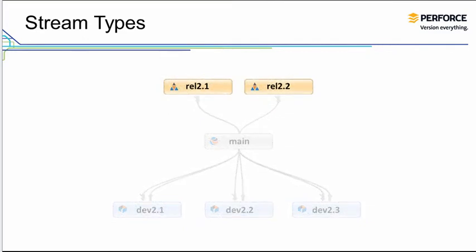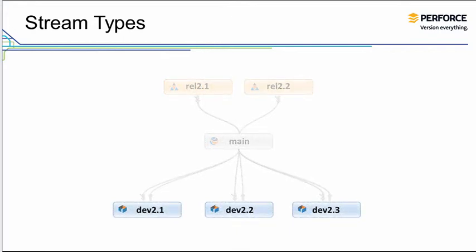You use release streams to refine and publish the final product, while others continue development on future versions in the mainline. You use development streams to work on new product features and functionality without destabilizing the mainline. For example, you would use a development stream to work on new product features and a release stream to hold the files associated with a specific product release. A stream's type might also establish the relative stability of a stream.